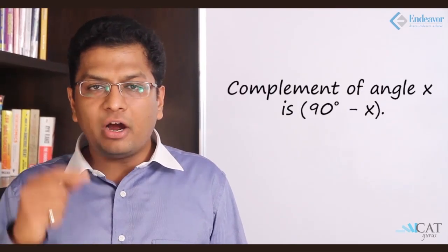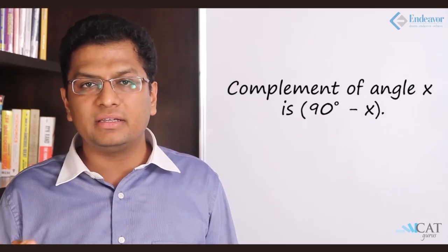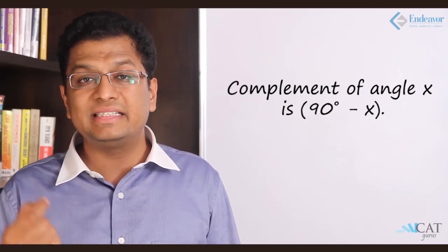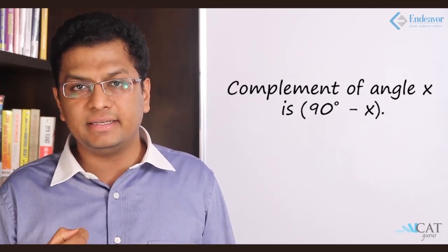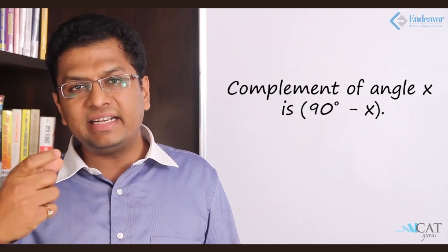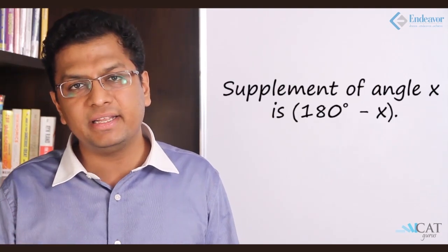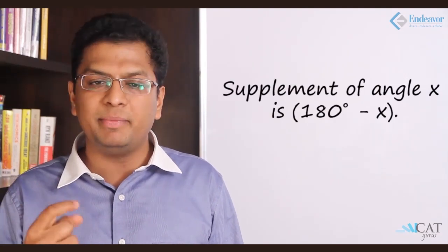The complement of an angle: if you need to make two angles out of 90 degrees, the difference between 90 degrees and the given angle is called its complement. Similarly, if you subtract the angle from 180 degrees, the result is called the supplement of that angle.